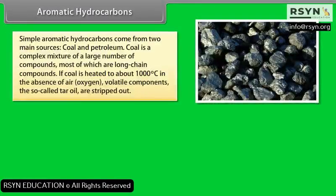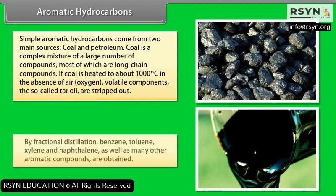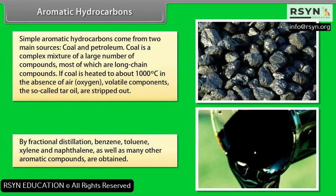Simple aromatic hydrocarbons come from two main sources: coal and petroleum. Coal is a complex mixture of a large number of compounds, most of which are long-chain compounds. If coal is heated to about 1000 degrees Celsius in the absence of air or oxygen, volatile components — the so-called tar oil — are stripped out. By fractional distillation, benzene, toluene, xylene, and naphthalene, as well as many other aromatic compounds, are obtained.